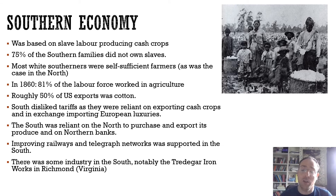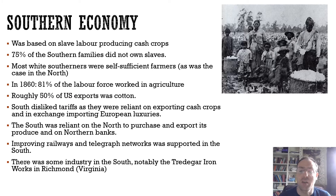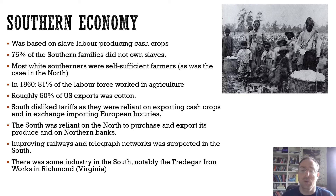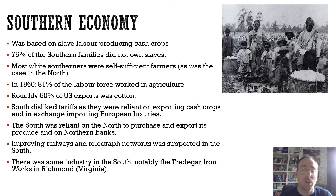So, the southern economy — is it wildly different from the north? Well, in one instance it absolutely is, because it's based on slave labour. There are about four million slaves in the southern states doing all the hard work producing cash crops, in particular cotton, but also sugar and tobacco — and this is what makes the south really wealthy. The people doing all the work are not earning the money. But not all white southerners are slave owners; in fact, 75% of southern families don't own any slaves at all. Most white southerners were self-sufficient farmers, as was the case in the north.